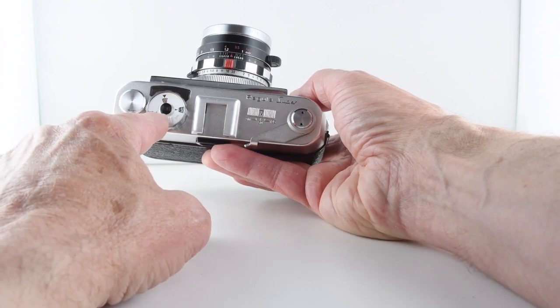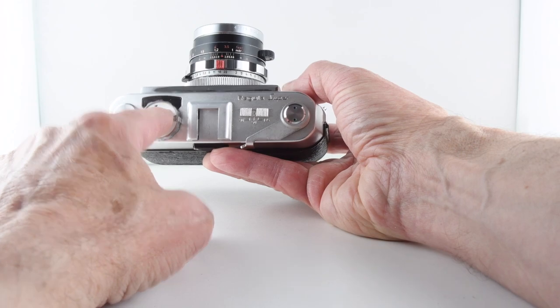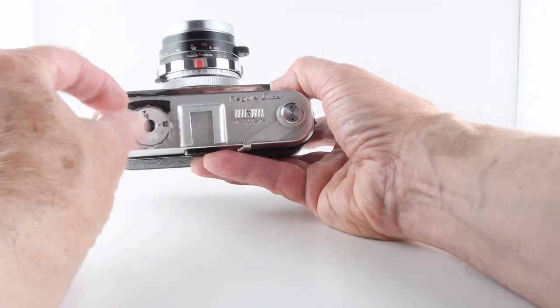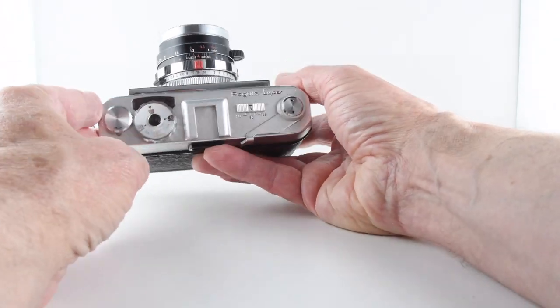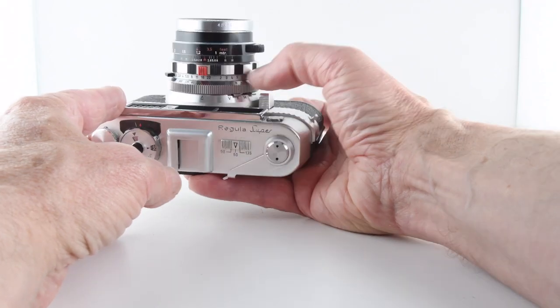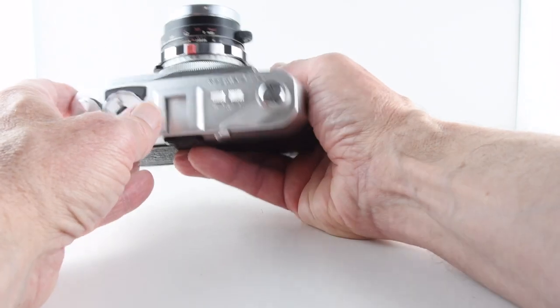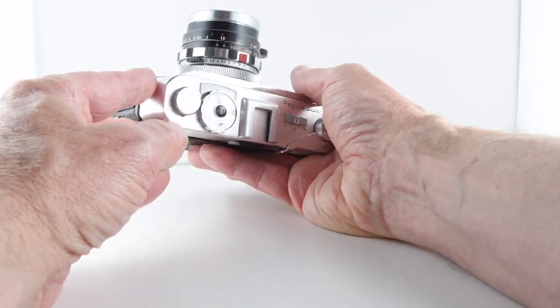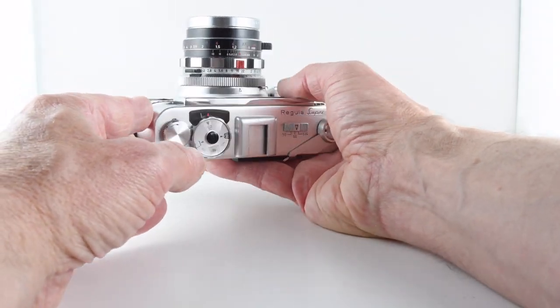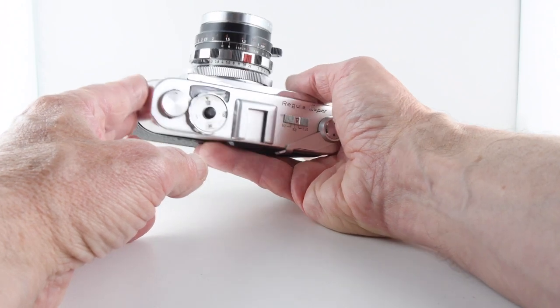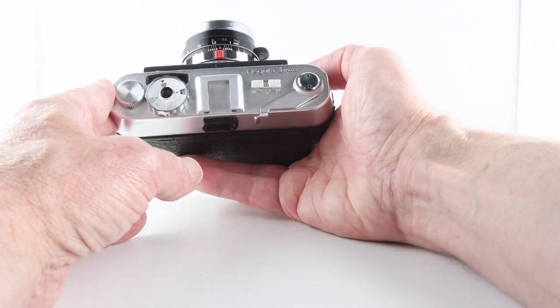Once we set our film speed, it will return a light reading. Once we match up the red needle with the light meter needle, we can transfer that number to the lens. That gives us a combination of shutter and aperture speeds we can use for that particular light meter reading.